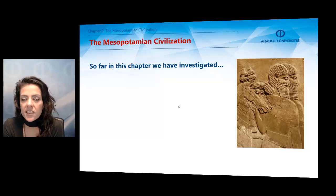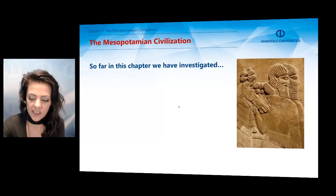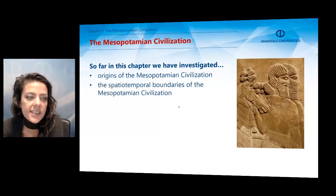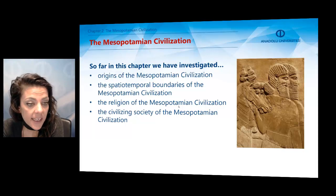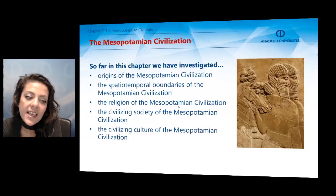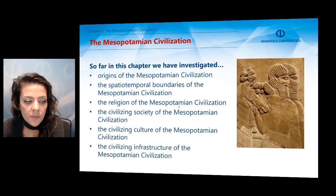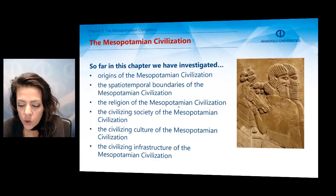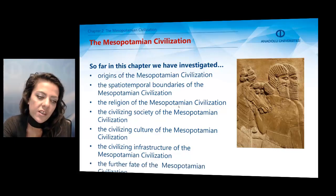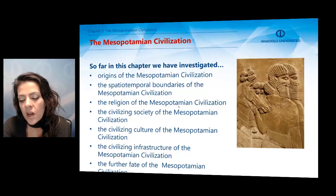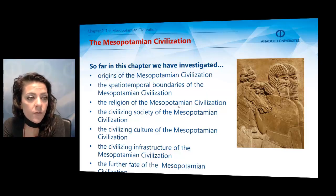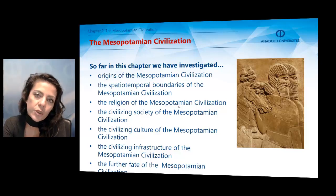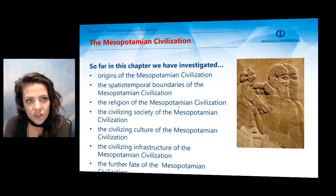In this chapter, we have investigated different aspects of Mesopotamian civilization, such as the origins, the spatiotemporal boundaries, the religion, and the civilizing society, as well as the civilizing culture and infrastructure of the Mesopotamian civilization. We also discussed the further fate of Mesopotamian civilization in the light of new types of societies. From Mesopotamian civilization, we will now move forward to other civilizations that are important for understanding world civilization in general. See you in the third chapter. Thank you.